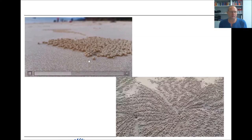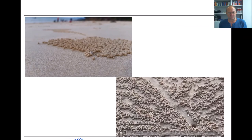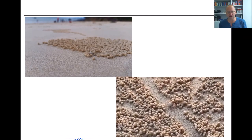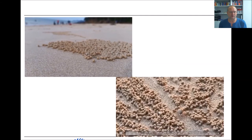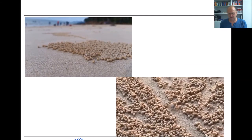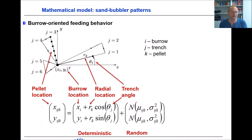The sand they have searched they form into a ball and throw behind them — supposedly to indicate which region of the sand they have already searched. In the end, in such a colony of sand bubbler crabs, the whole beach is covered by this pattern until the next flood washes it away. If we take this pattern and try a simple mathematical model, we see there is a burrow location in the center, radial lines called trenches, and pellets on those trenches specified by burrow location, radial position, and trench angle. By adding a small random term, the patterns look similar to those found on tropical beaches.